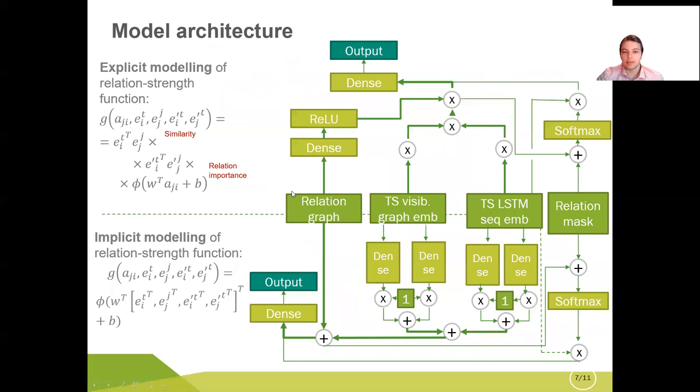And the next step is how we construct a graph neural model itself. So there are two ways to model the relation strength function. The first one is implicit step.